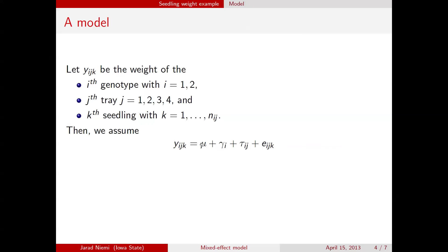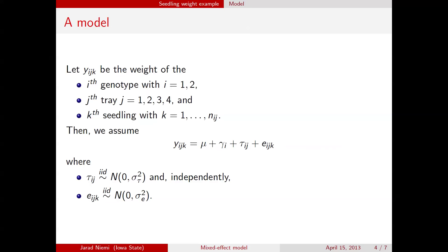We write down the model as: y_ijk = μ + γ_i + τ_ij + ε_ijk, where μ is the overall mean, γ_i is the genotype effect (one for genotype A and one for genotype B), τ_ij is a tray within genotype effect (eight of these in total), and ε_ijk is random variability or measurement noise. In a non-Bayesian perspective, γ_i is just a parameter we estimate. τ_ij is a random effect, so we place a prior on it — all trays are assumed independent with a common variance σ²_τ. The error terms ε_ijk are independent across all seedlings with common variance σ²_ε.